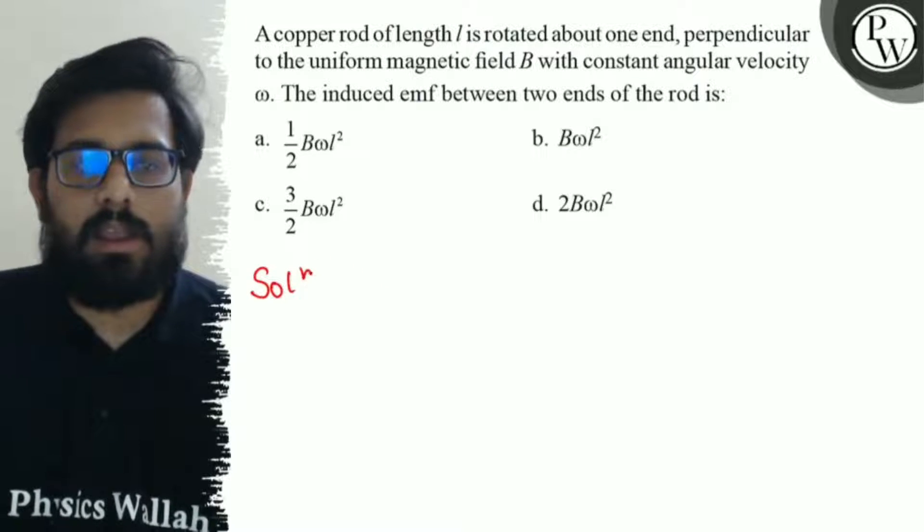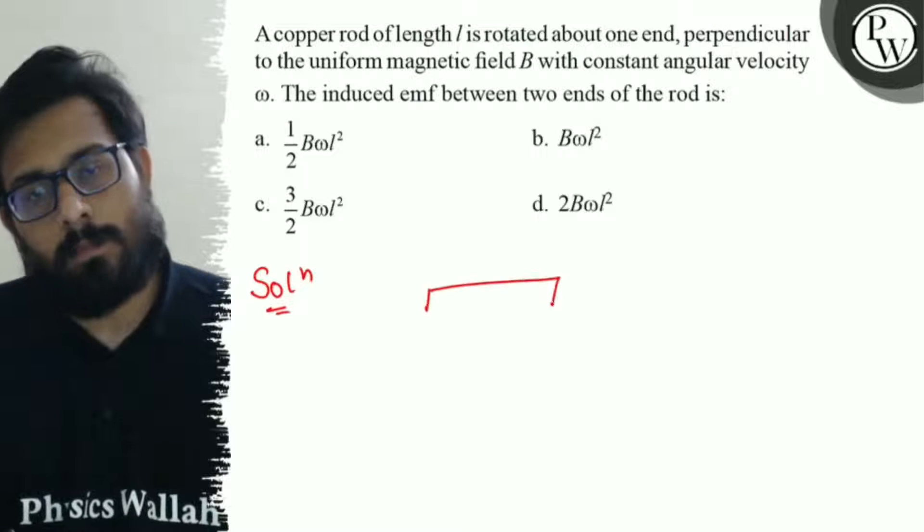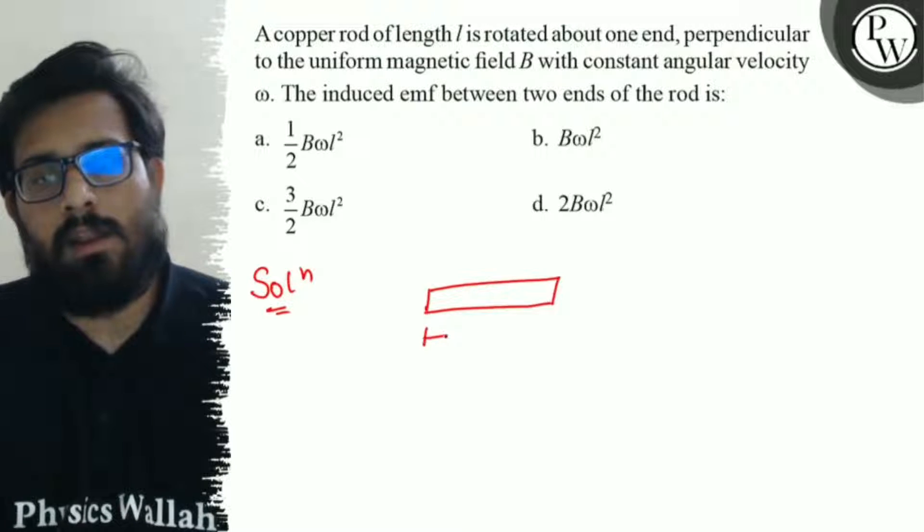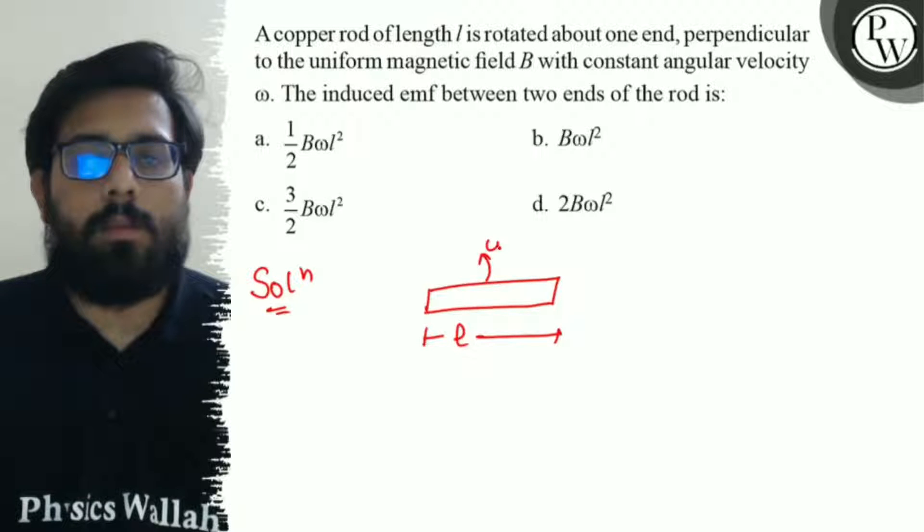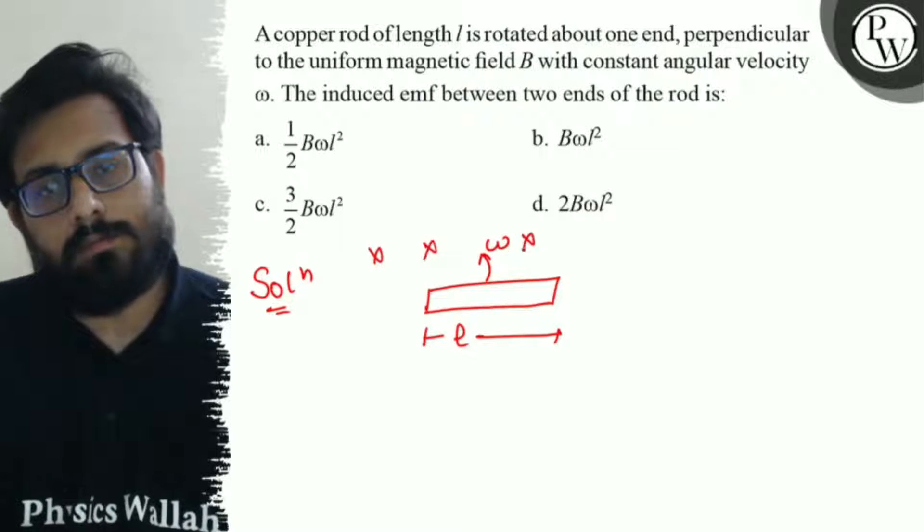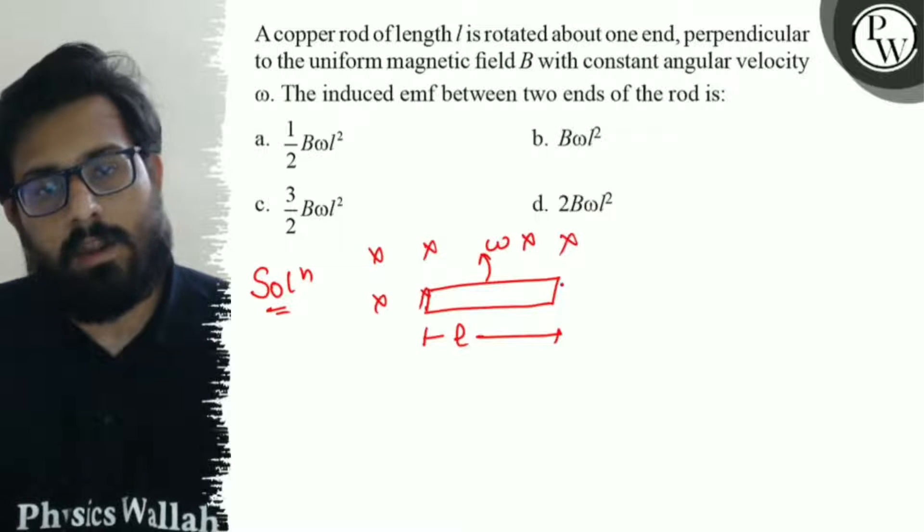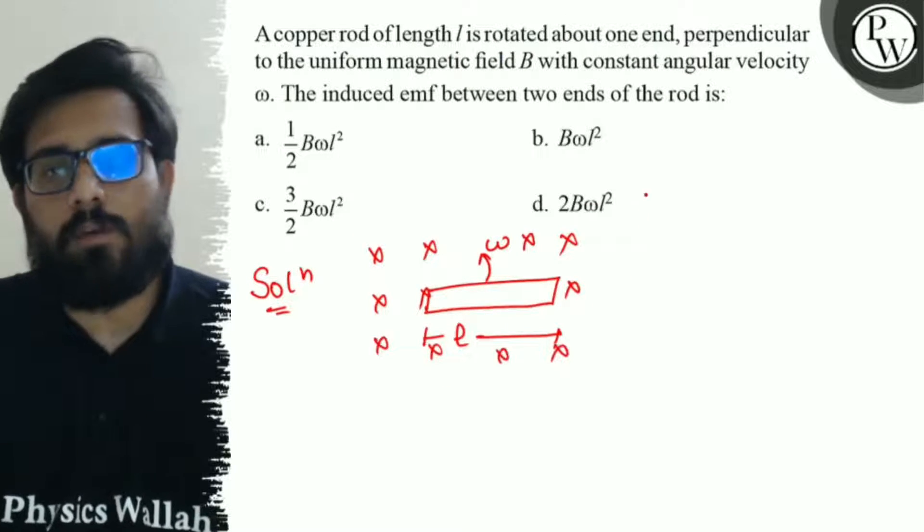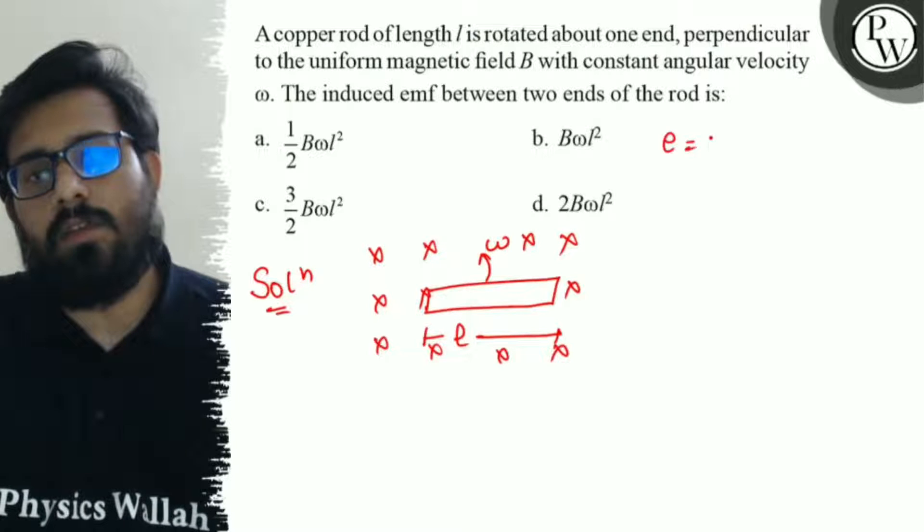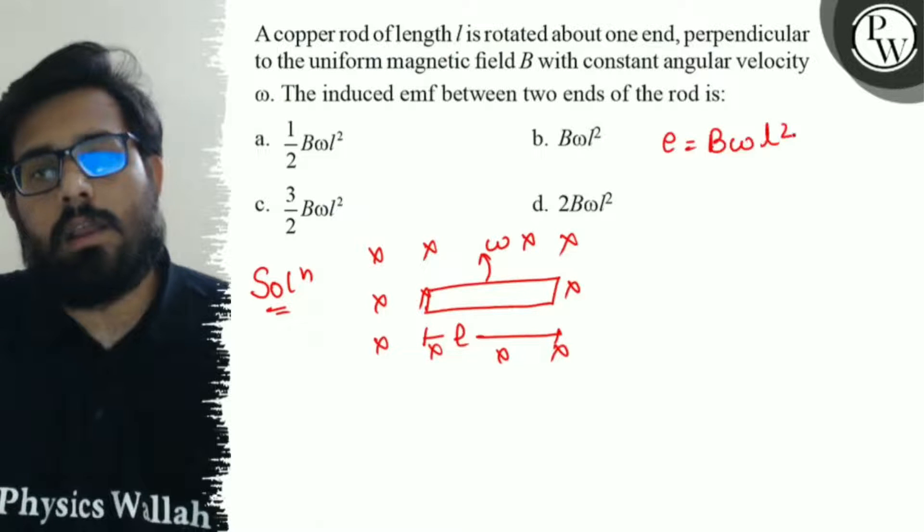So, this question says that we have a rod having the length of L, and the field is perpendicular, so for this we have a direct formula of the induced EMF as equals to B omega L square by 2.